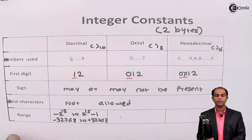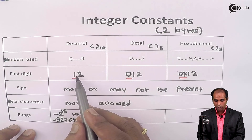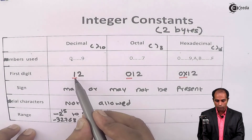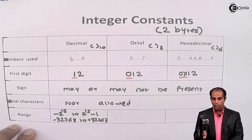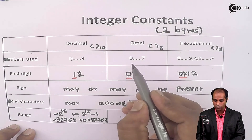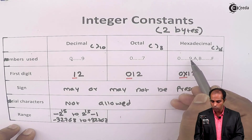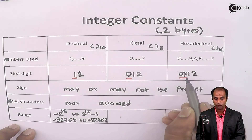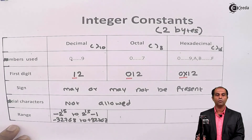To summarize the formal definitions: a decimal integer constant starts with a non-zero digit and consists of digits 0 to 9. An octal integer constant starts with 0 followed by digits 0 to 7. A hexadecimal integer constant starts with 0x or 0X followed by digits 0 to 9 and A to F. Sign may or may not be present, special characters are not allowed, and the value must be within the valid range.